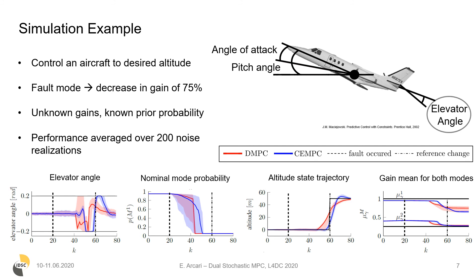Convergence of the nominal gain slows down as the aircraft approaches the reference, since input excitation decreases, which means that identification is no longer needed.